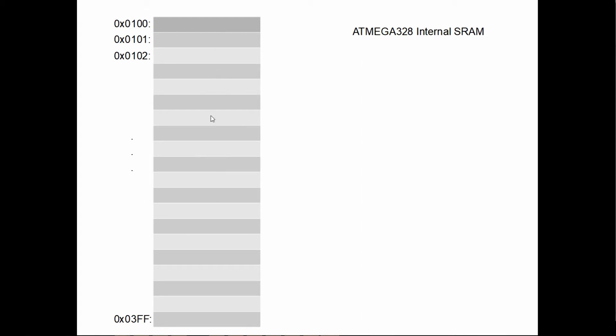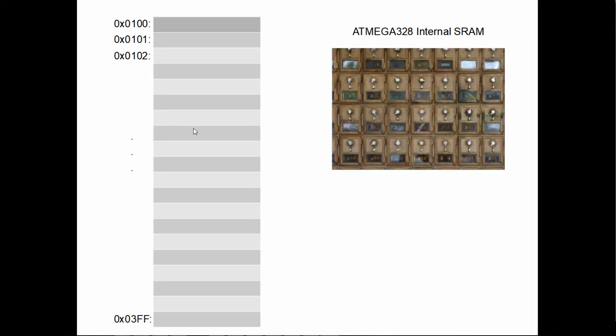If we look at what memory looks like - say this is a sample of RAM in the ATmega328 - each one of these represents a byte, and each byte has an address. For the internal SRAM of the ATmega328 it starts at 0x100 hex. Each byte is kind of like a mailbox: each mailbox has a separate number that differentiates it from all the others, and each mailbox can only hold a certain amount of information.